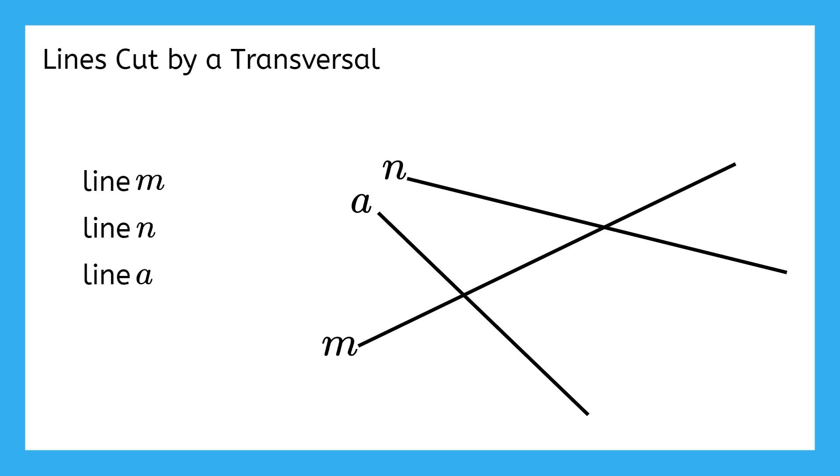Which of these lines is the transversal? Line M. Well done. Line M intersects both line A and line N, which makes it a transversal.